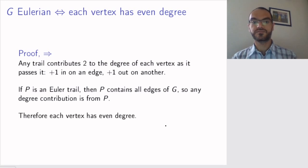And since all contributions come from this trail, each vertex has even degree. There are no other edges that can contribute to the degrees. So if the graph is Eulerian, then each vertex has even degree.